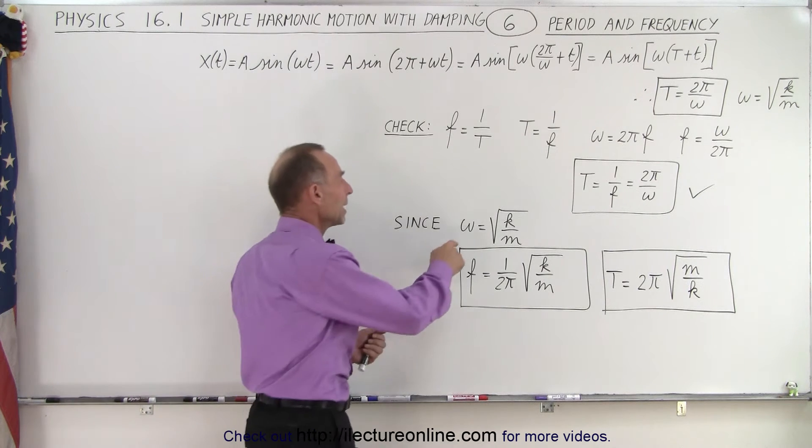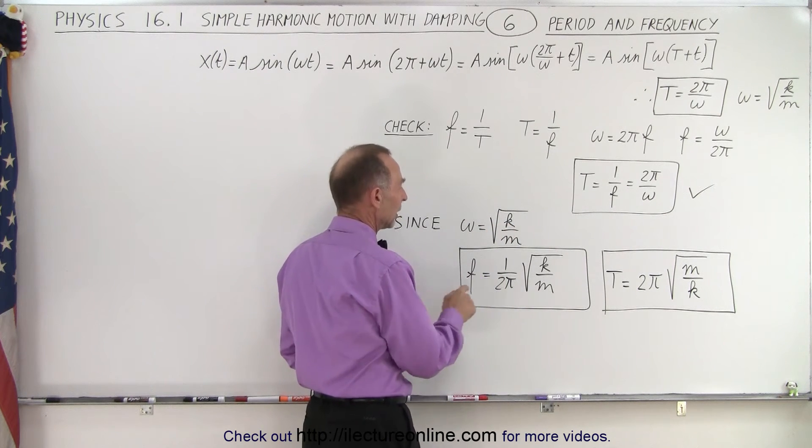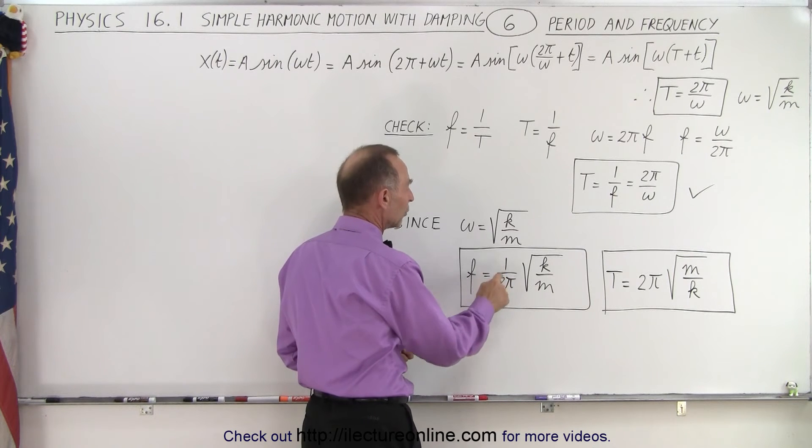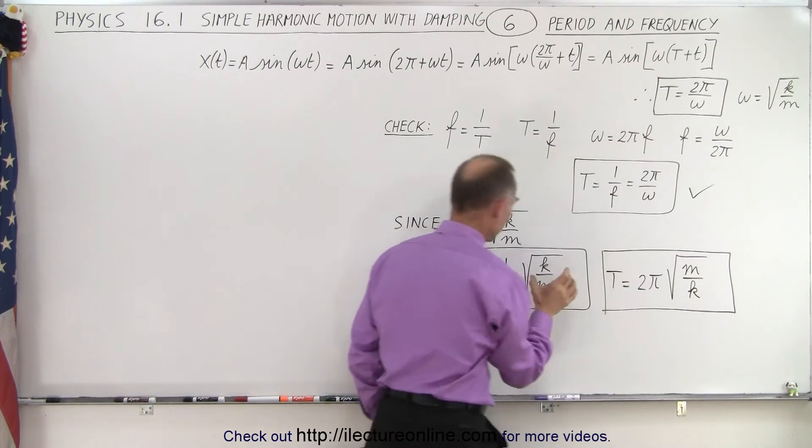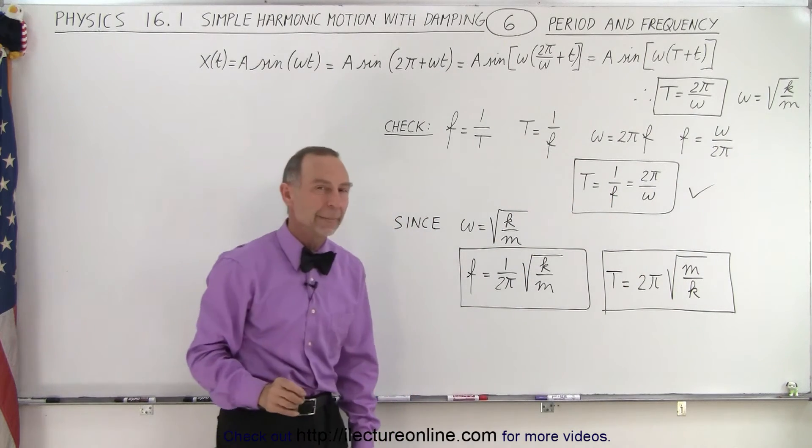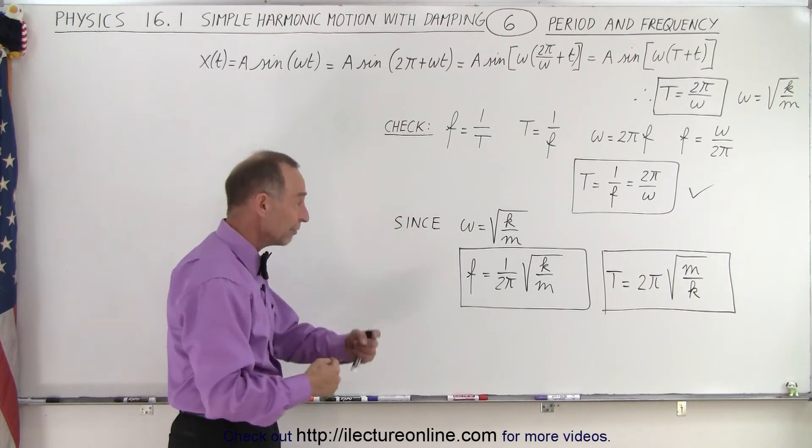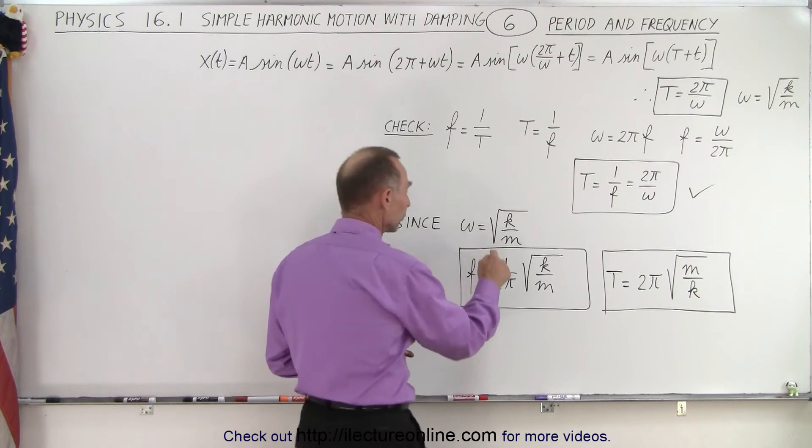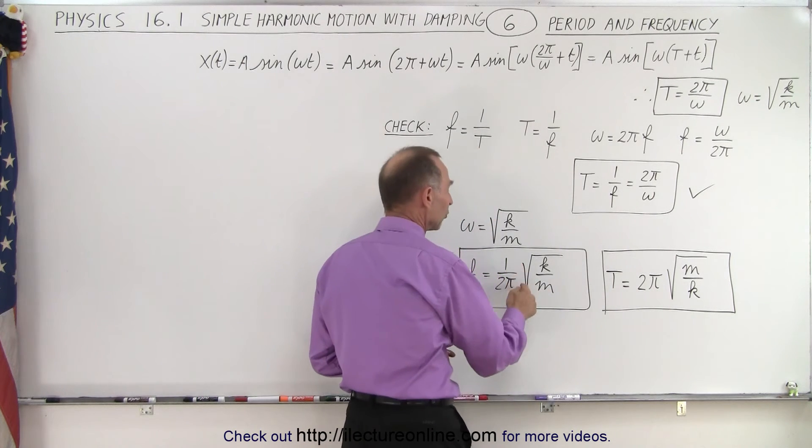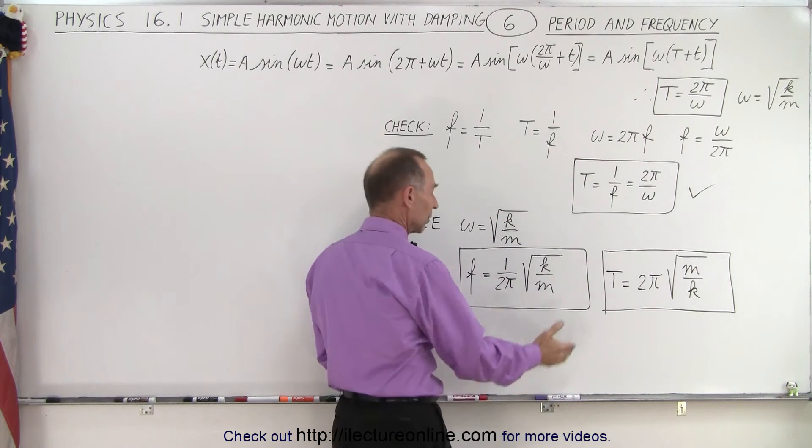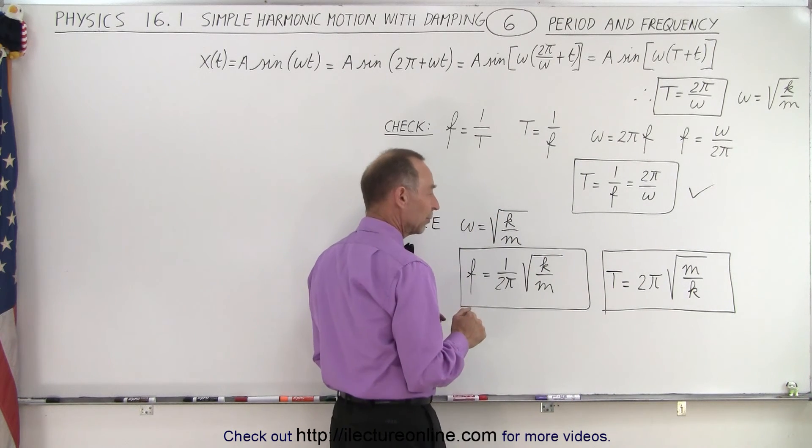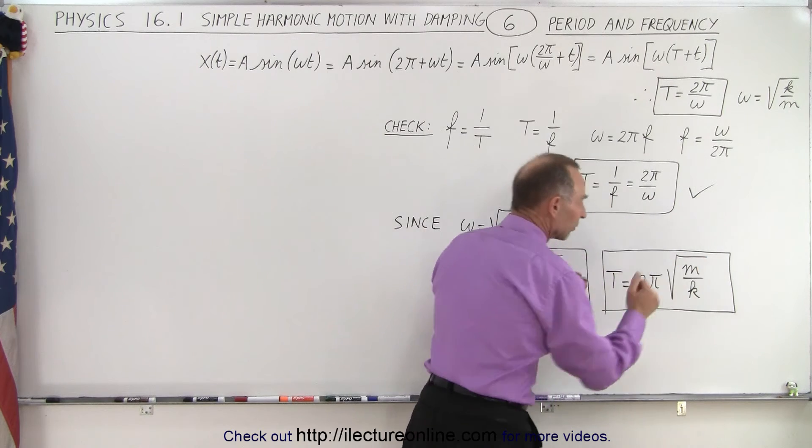And since omega is equal to the square root of k over m, we can then write that the frequency is equal to 1 over 2 pi times omega, where omega is the square root of k over m. And since the period is the inverse of the frequency, then 1 over 2 pi becomes 2 pi, and the square root of k over m becomes the square root of m over k. And so here we have an expression for the frequency of the oscillation and of the period of the oscillation.